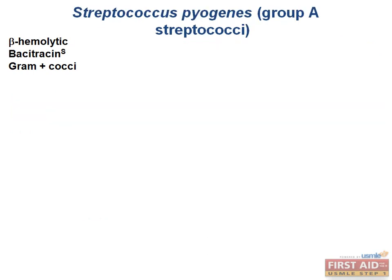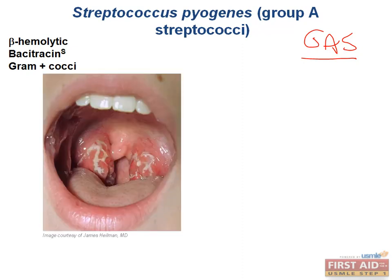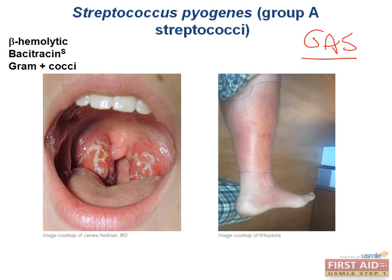Strep pyogenes, also known as group A strep (GAS), is beta-hemolytic, bacitracin-sensitive, gram-positive cocci. Its major virulence factor is M protein, which is antiphagocytic and prevents normal phagocytosis. Strep pyogenes causes pharyngitis (strep throat) and can also cause skin infections such as cellulitis or impetigo.